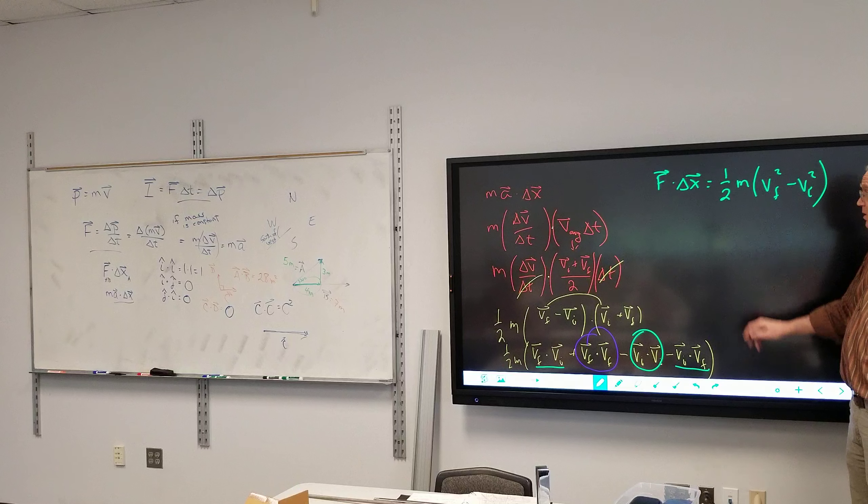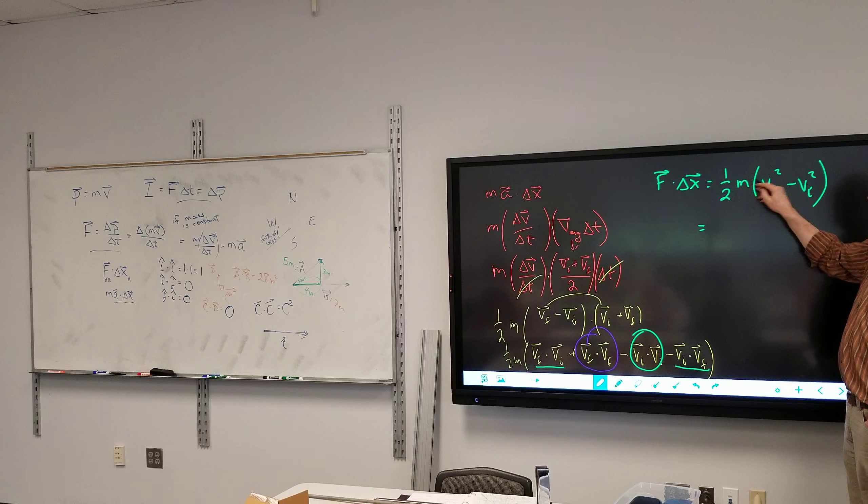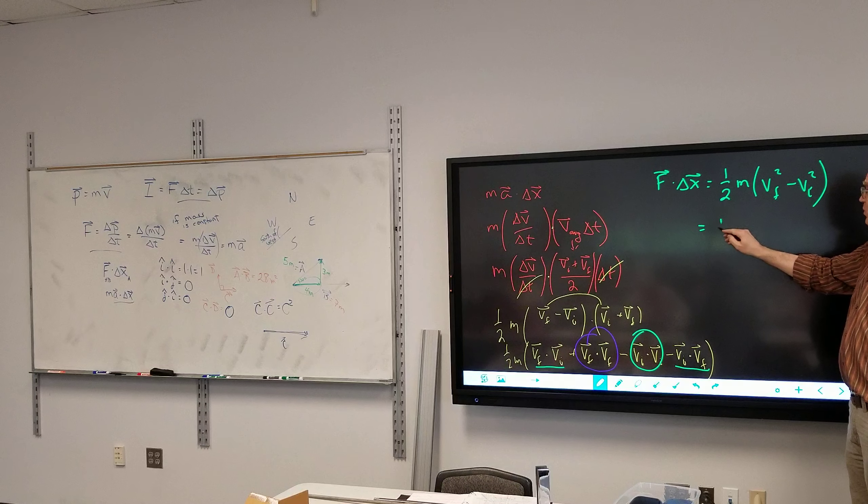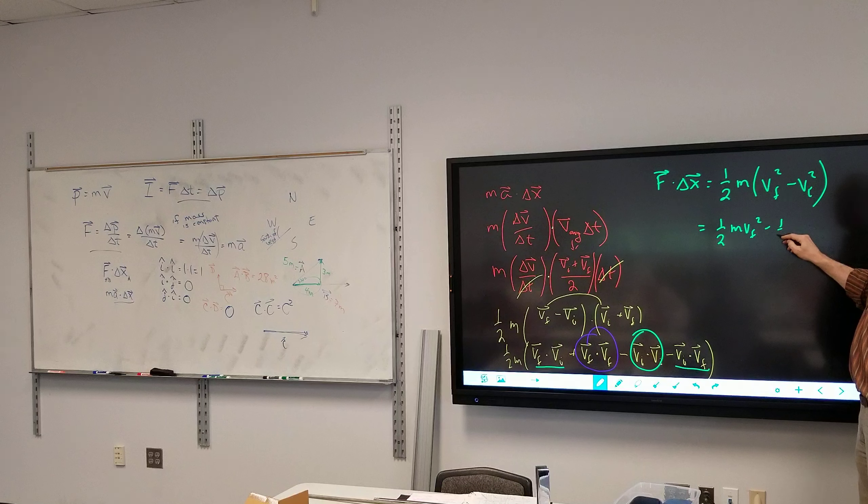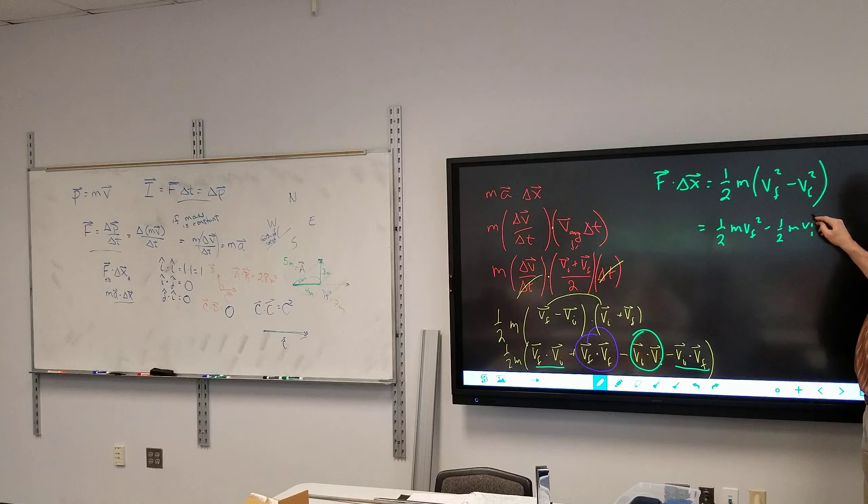Really close to the end here now. I'm going to distribute, I'm going to take this one half and multiply times this and then times that. So I have one half MVF squared minus one half MVI squared.